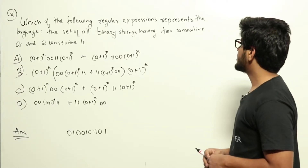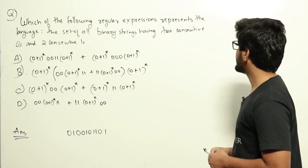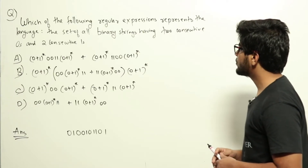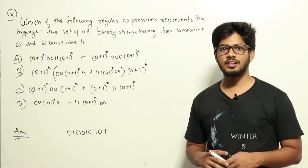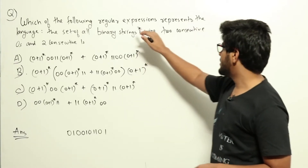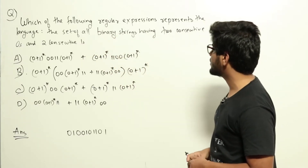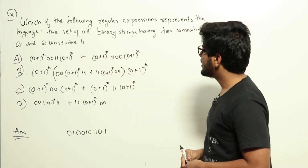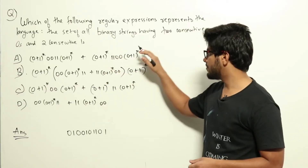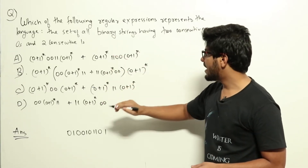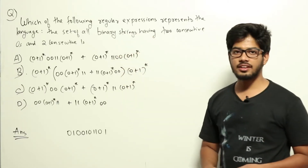Which of the following regular expressions represents the language — the set of all binary strings having two consecutive zeros and two consecutive ones? This is a question from theory of computation regarding regular expressions. Four options have been given which contain four regular expressions, and they are asking which of these regular expressions captures the language given correctly.